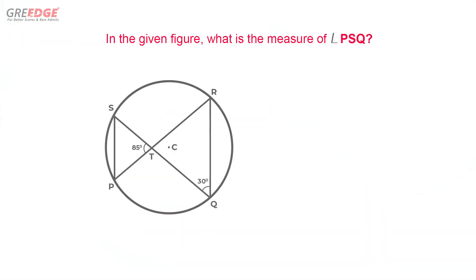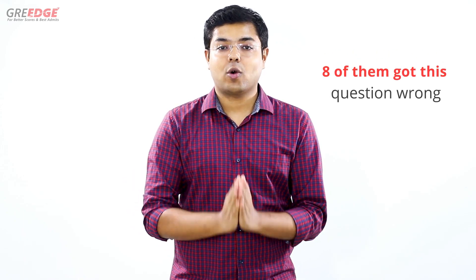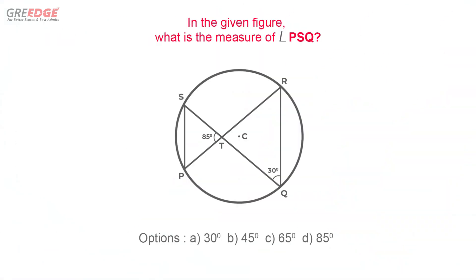Tip number three: don't jump the gun. Let's look at another GRE geometry question. In the given figure, what is the measure of angle PSQ? The options are provided. Feel free to pause the video and give it a try — leave your comments below and let us know if you got the right answer. Now, when we gave the same question to 10 GRE aspirants, 8 of them got it wrong. If you went with option A — 30 degrees — then you are among the 8 who got this question wrong.